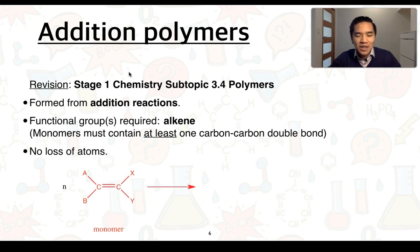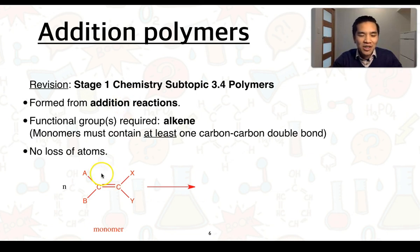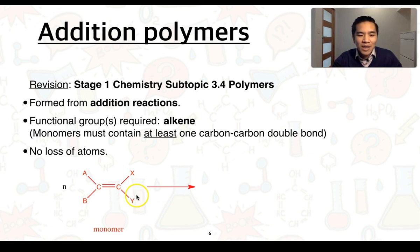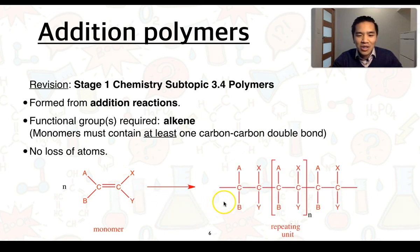A key point is that with addition polymerization there is no loss of atoms as the monomer units join to one another. What we see is the carbon-to-carbon double bond being converted into a single bond, which frees up a bond on the carbon atoms to join onto a successive monomer structure. In the general formula, we have a carbon-to-carbon double bond with variable groups labelled A, B, X and Y. Through an addition reaction with the right conditions, these monomer units join to form the polymer structure, where each carbon atom is bonded through a single carbon-to-carbon bond.